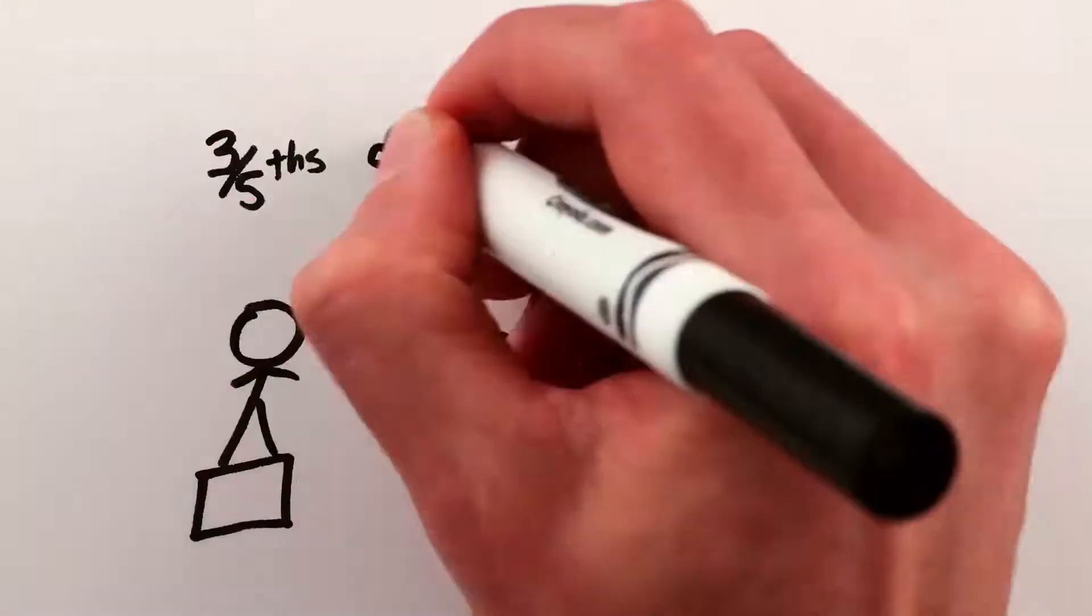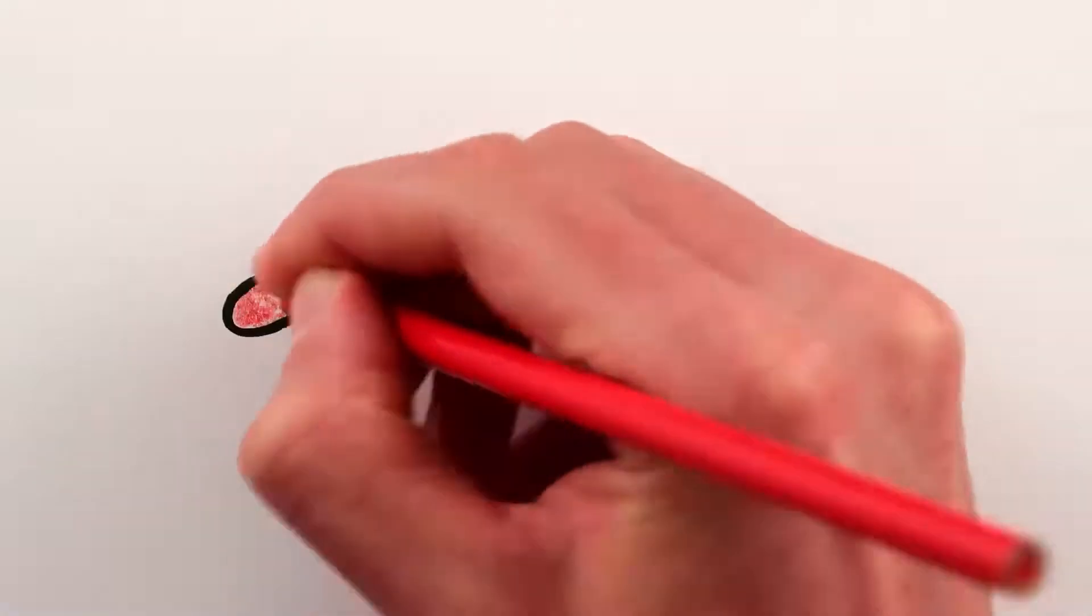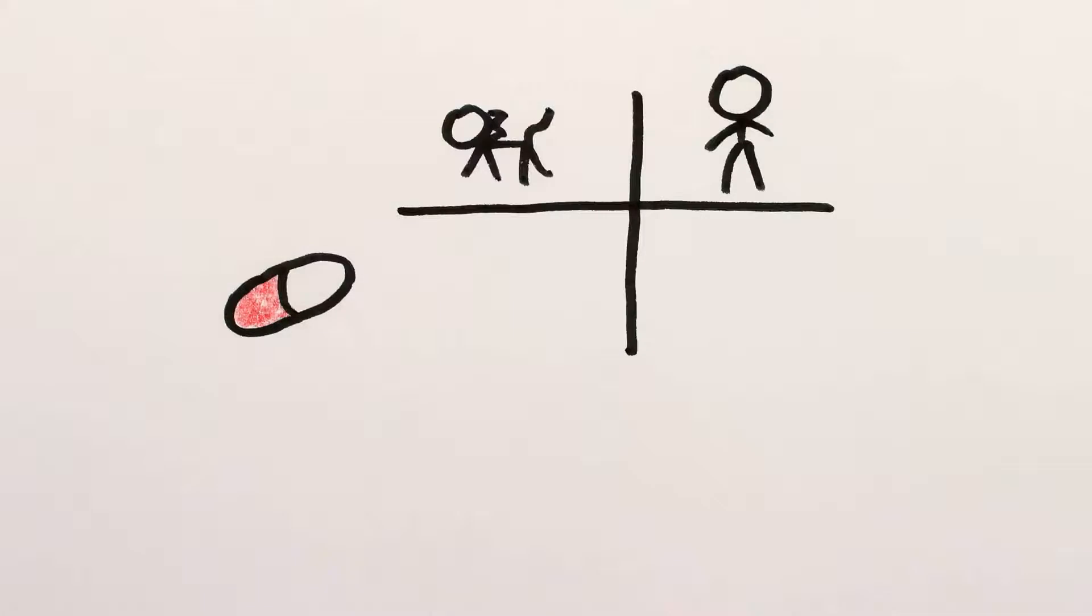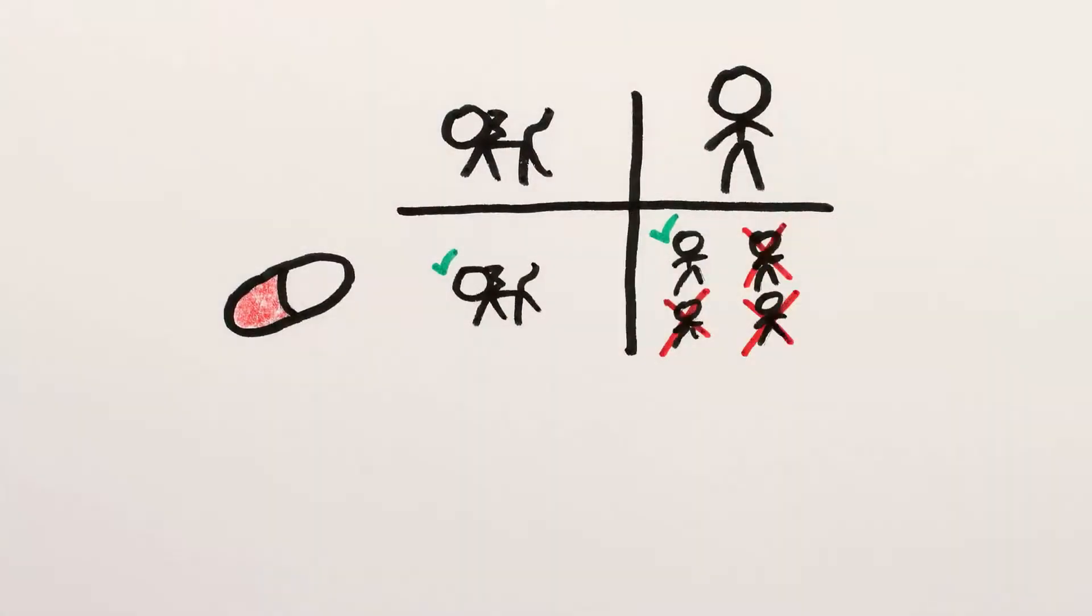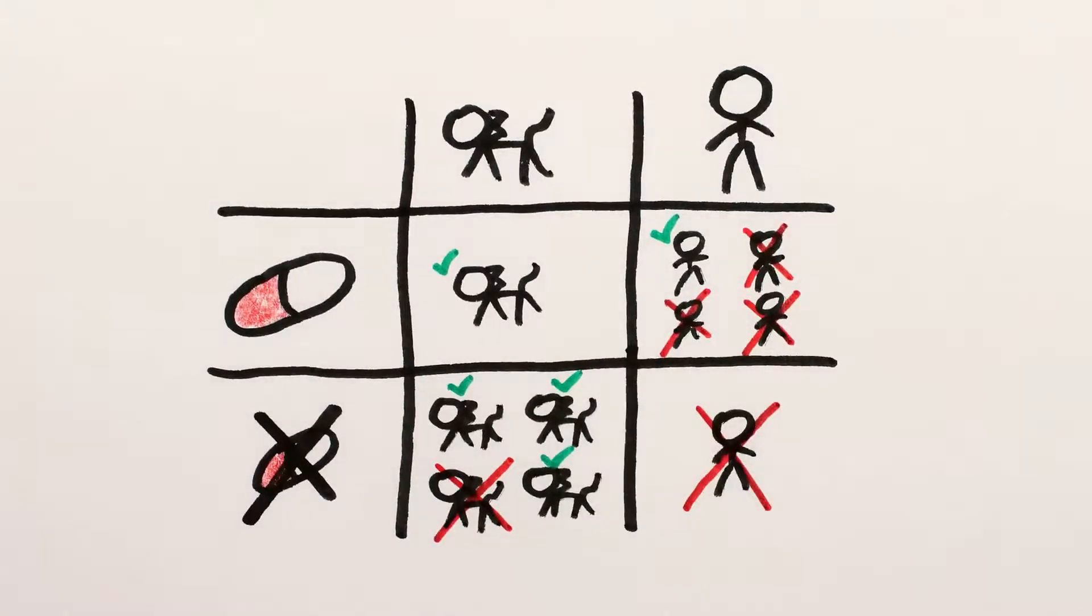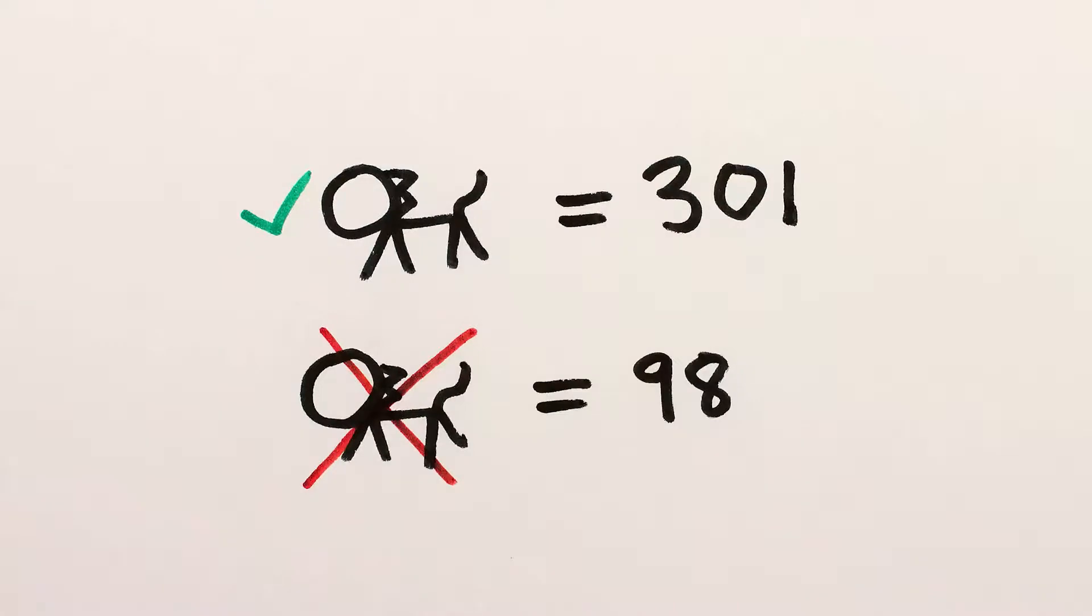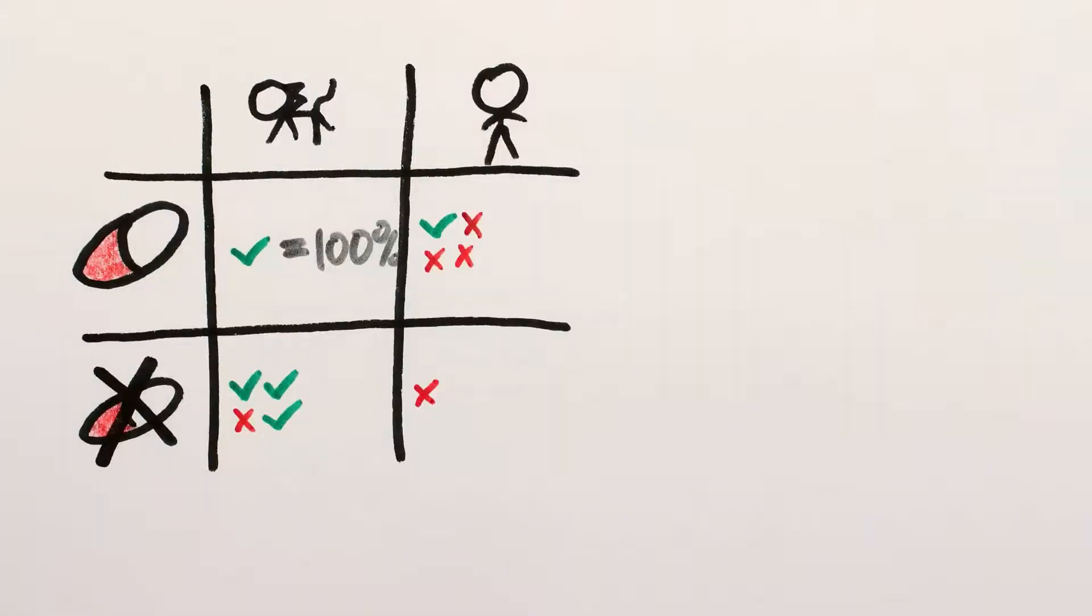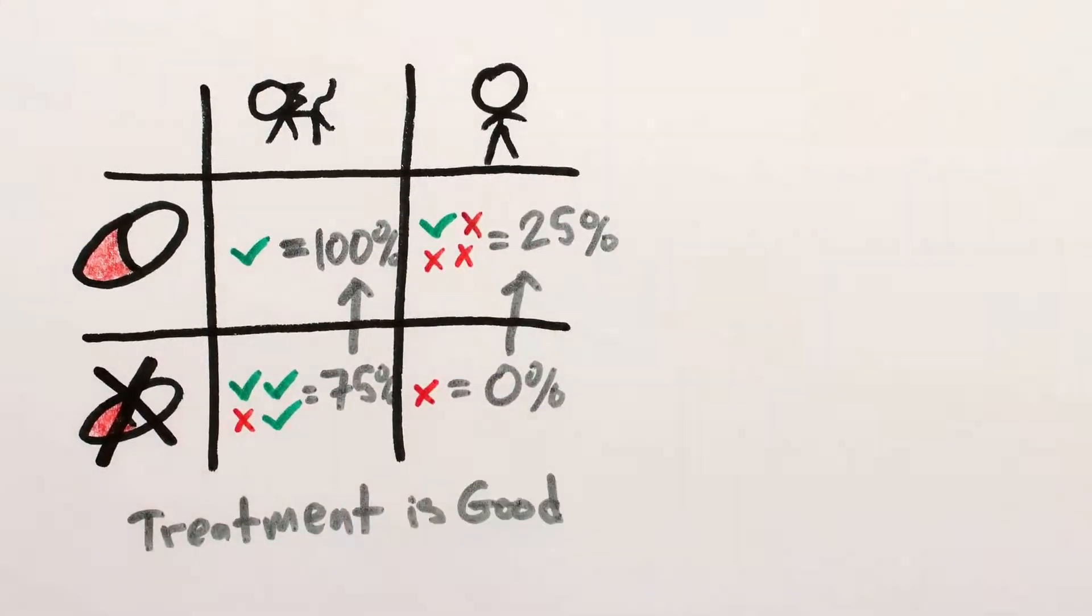We often evaluate the success of medical treatments or social programs by how much of the population they help. But this can be a problem. Suppose we're treating a disease that afflicts both people and cats. Among one cat and four people we treat, the cat and one person recover and three people die. And of four cats and one person we don't treat, three of the cats recover while one cat and the person die. In our sample, 100% of treated cats survive while only 75% of untreated cats do, and 25% of treated humans survive while 0% of untreated humans do. Which makes it seem like the treatment improves chances of recovery.